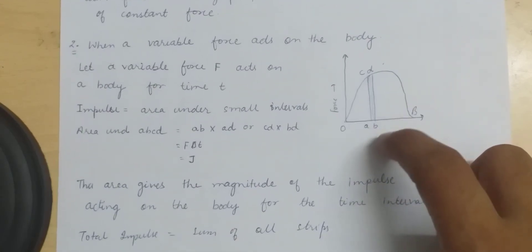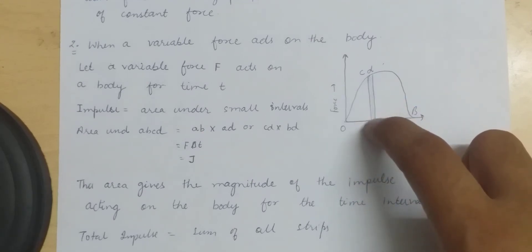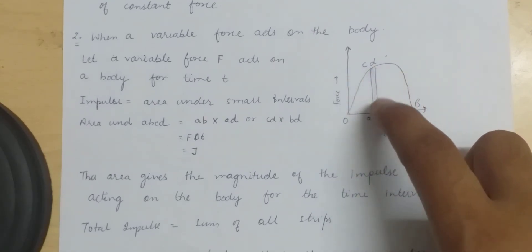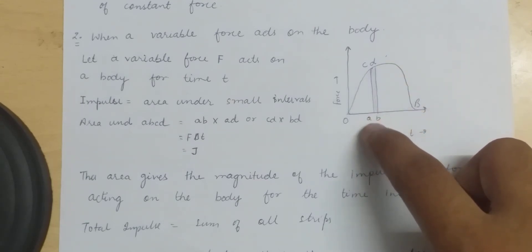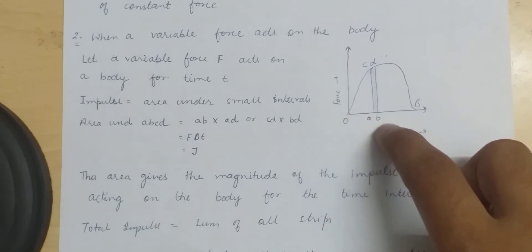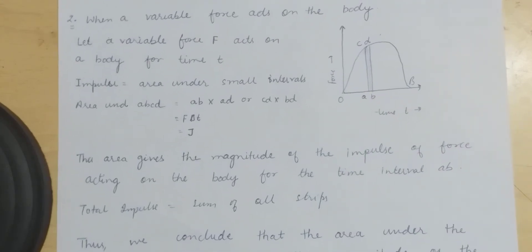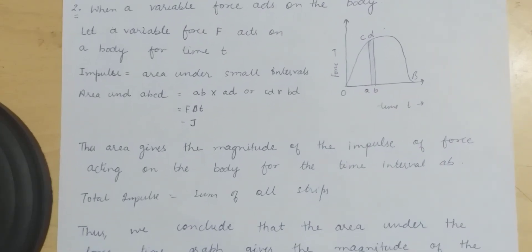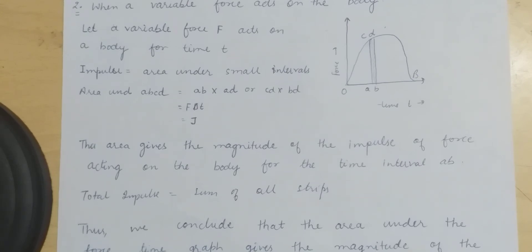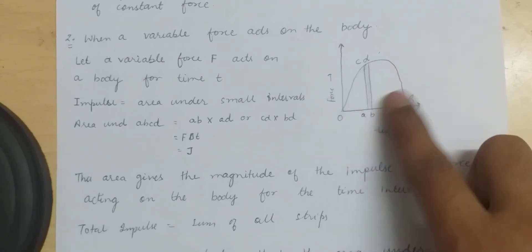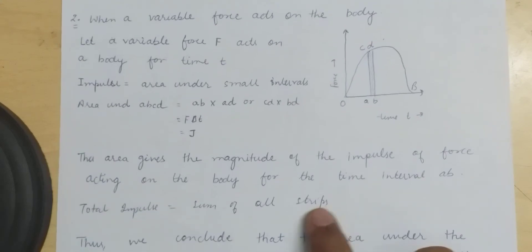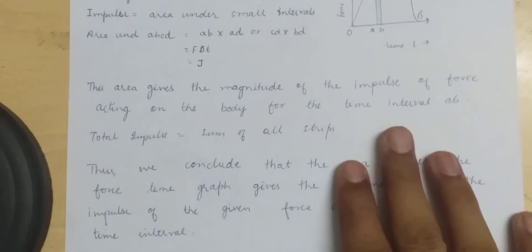The impulse equals the area under a small strip. The area under strip ABCD equals AB multiplied by AC, or CD multiplied by BD. AC represents force and AB represents delta t, giving impulse J for that strip. Thus the area of each strip gives the magnitude of the impulse for the time interval AB. The total impulse equals the sum of all such strips.